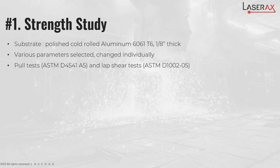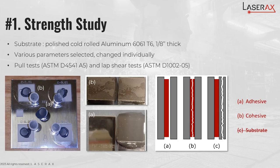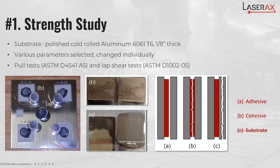We performed pull tests and lap shear tests in this phase. Not only did we want to quantify the strength of the joints, we also wanted to characterize the rupture type. There are three possible outcomes in a joint rupture: an adhesive rupture, which is between the adhesive and the surface; a cohesive rupture, which is within the epoxy itself; or a substrate rupture, which is not applicable in our case because we have a metallic substrate. The goal is to achieve a cohesive rupture because that means that your surface preparation is not the limitation of your joint strength.